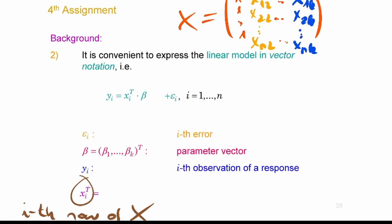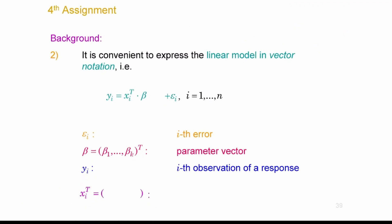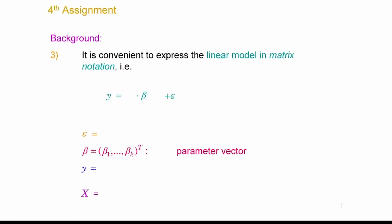Xi-transpose is the i-th row of the design matrix. Y is an N-by-1 vector, the noise is also an N-by-1 vector, the parameter vector is K-by-1, and the design matrix is an N-by-K matrix. Each column denotes a set of observations to a predictor. When you open an Excel file, in every column you have the observations to that variable listed — not in rows.